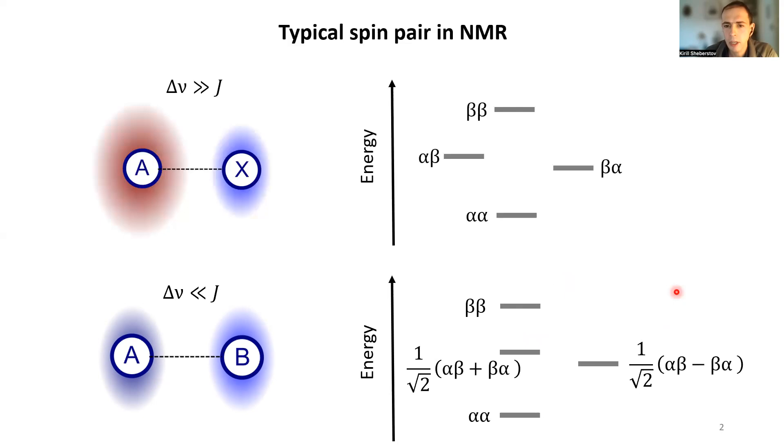These states have interesting properties with respect to symmetry. Triplet states are symmetric with respect to spin permutation, and singlet state is antisymmetric with respect to spin permutation.